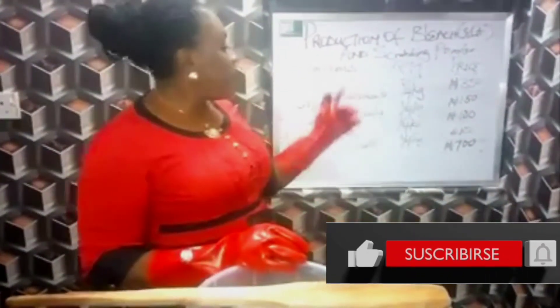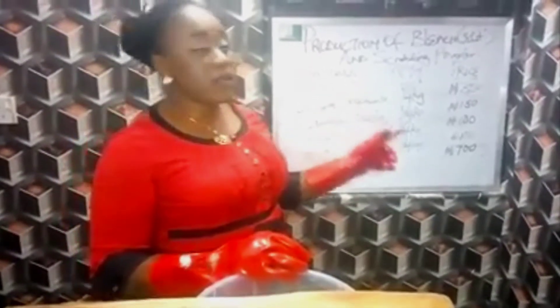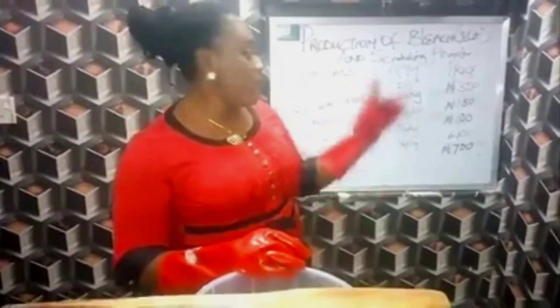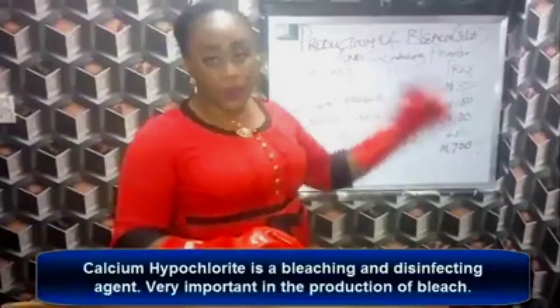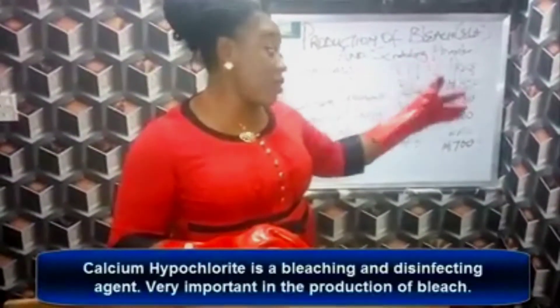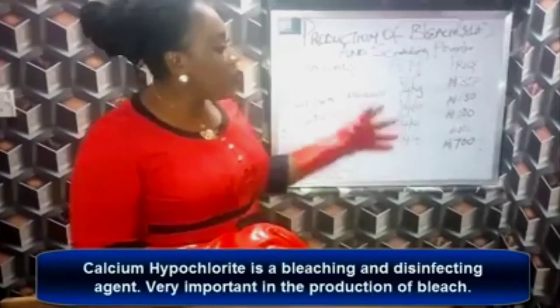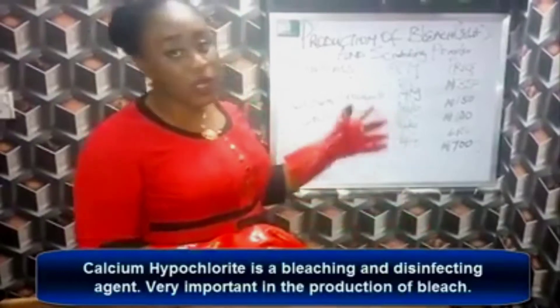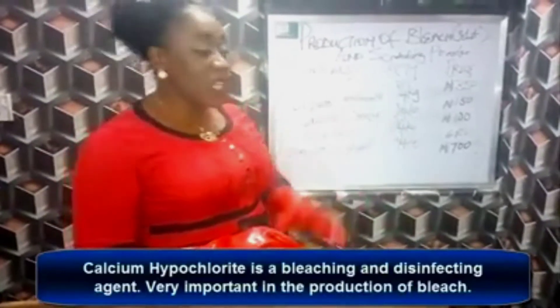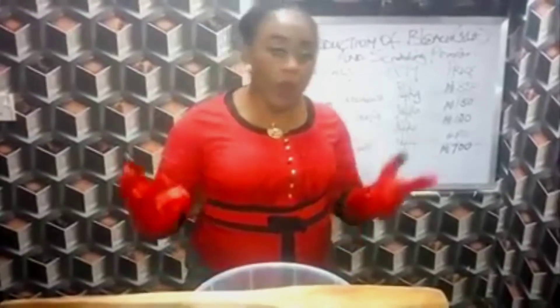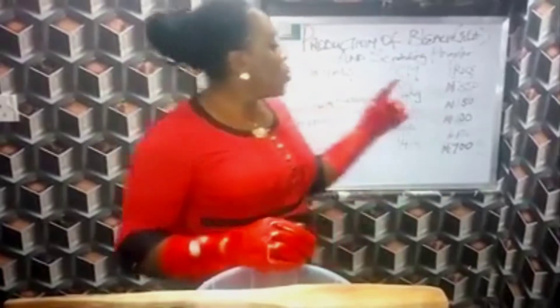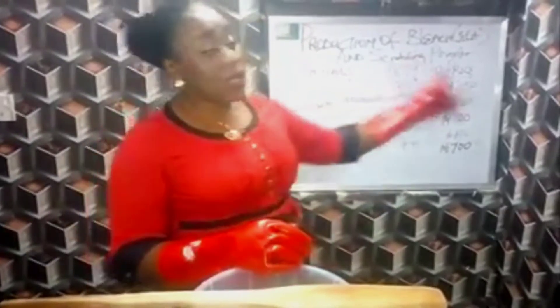The first chemical I am going to be using today is calcium hypochlorite. We are using 1.4 kg. Precisely, I got it for 315. Now I am running a price estimate so that you will know how much it costs to actually produce eight liters of bleach and how much you are likely going to sell. Because it is all about your client knowledge. So like I said, I bought it for 315.